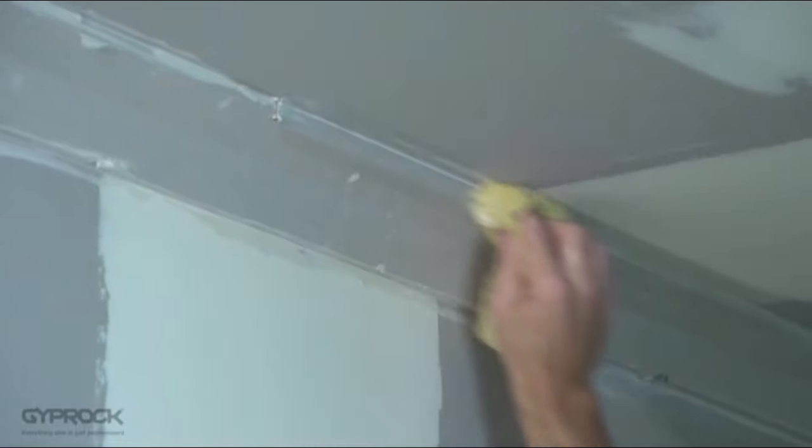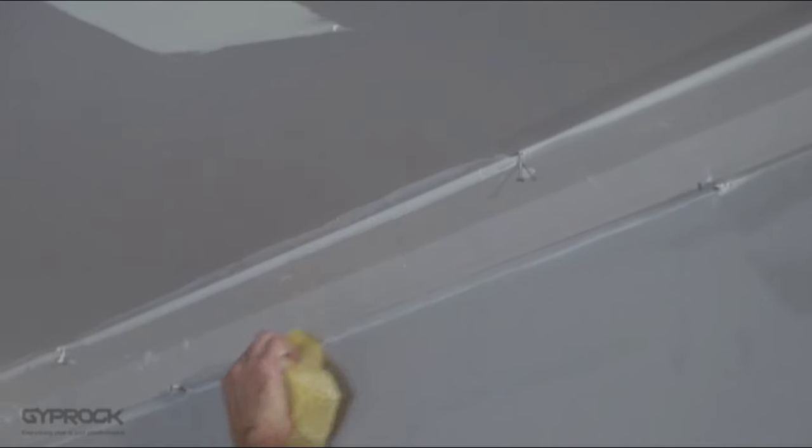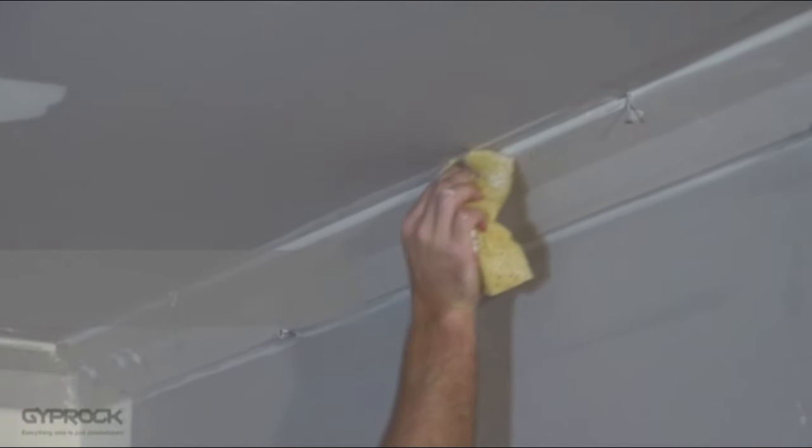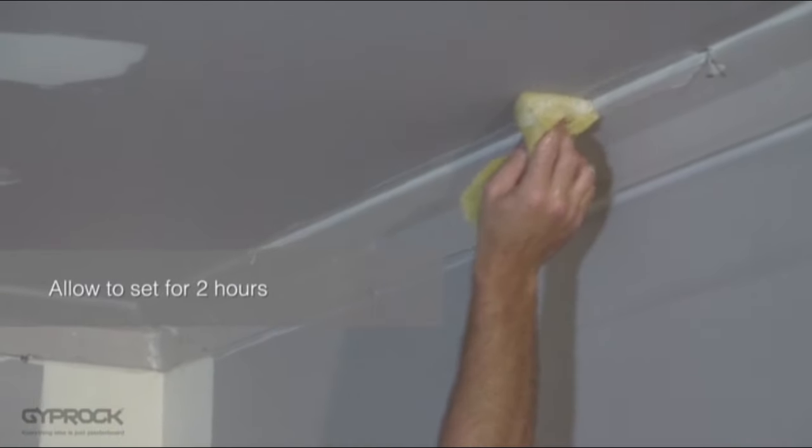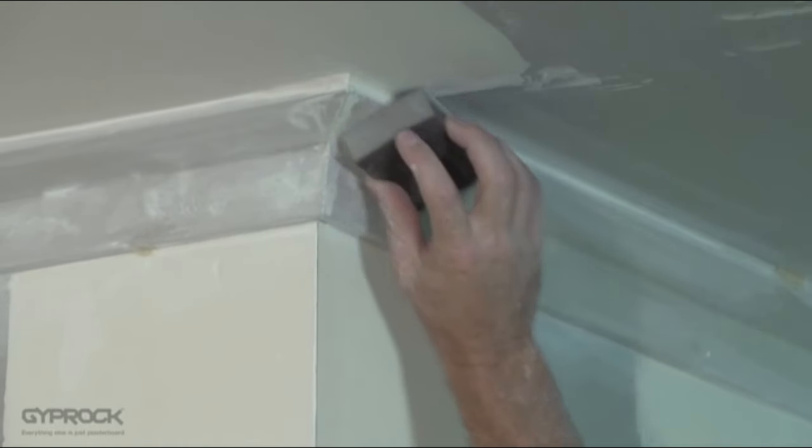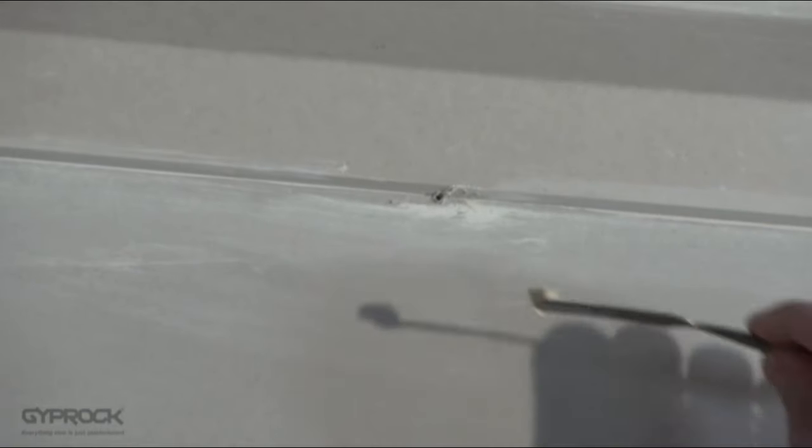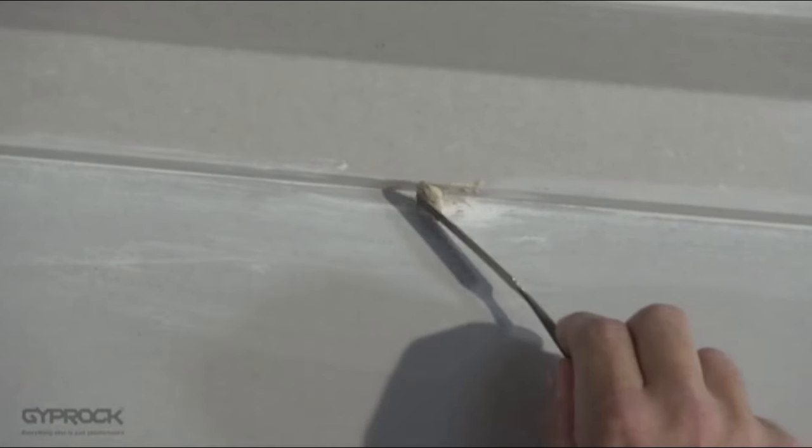Once your lengths are in place clean down with a damp sponge being careful not to saturate the paper face of the corners or plasterboard. Allow to set for at least two hours before removing the nails and lightly sanding excess compound of the junctions. If any of the nail holes are still visible you may need to fill, sponge and sand these again.